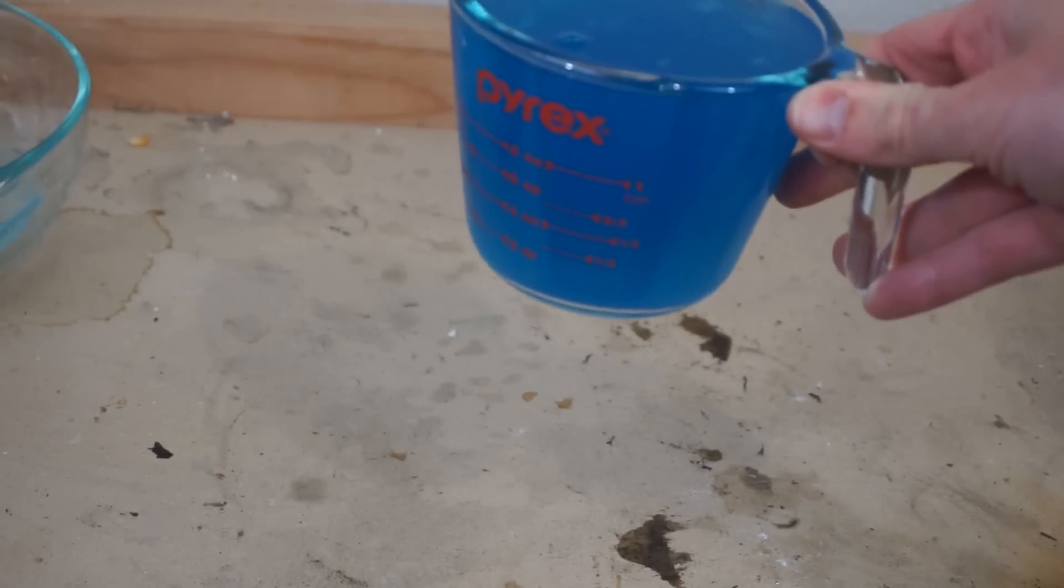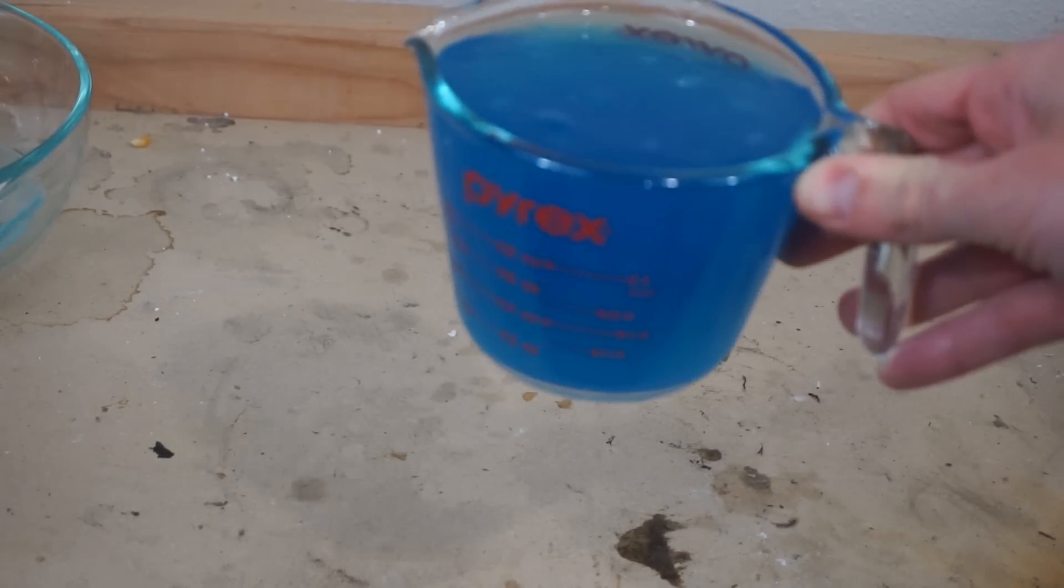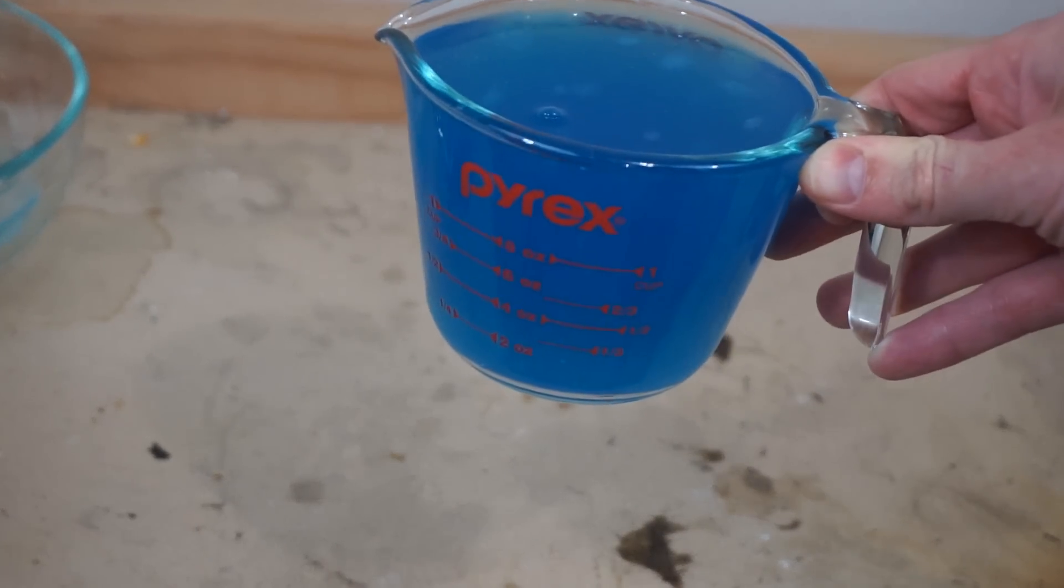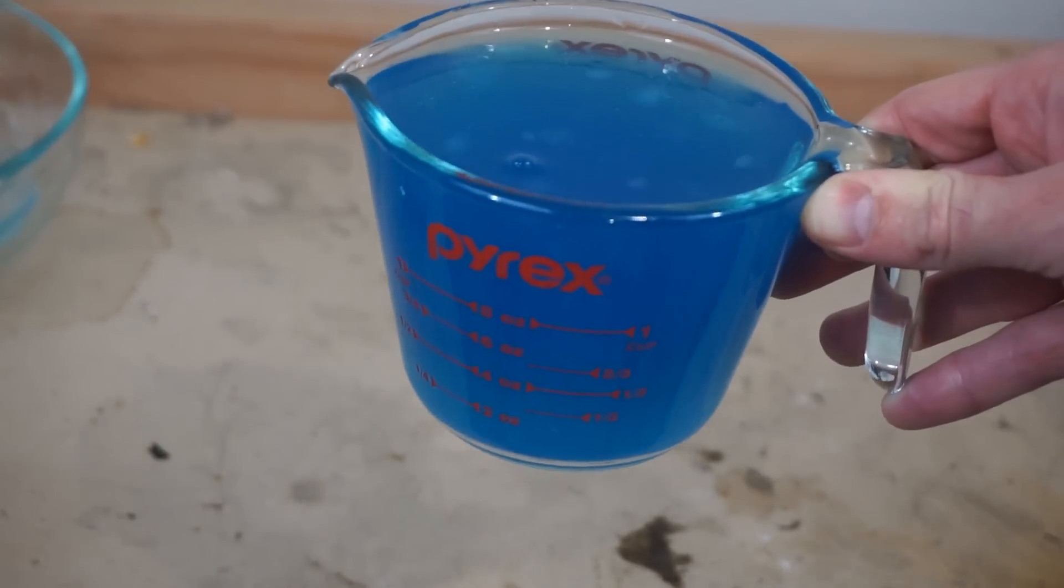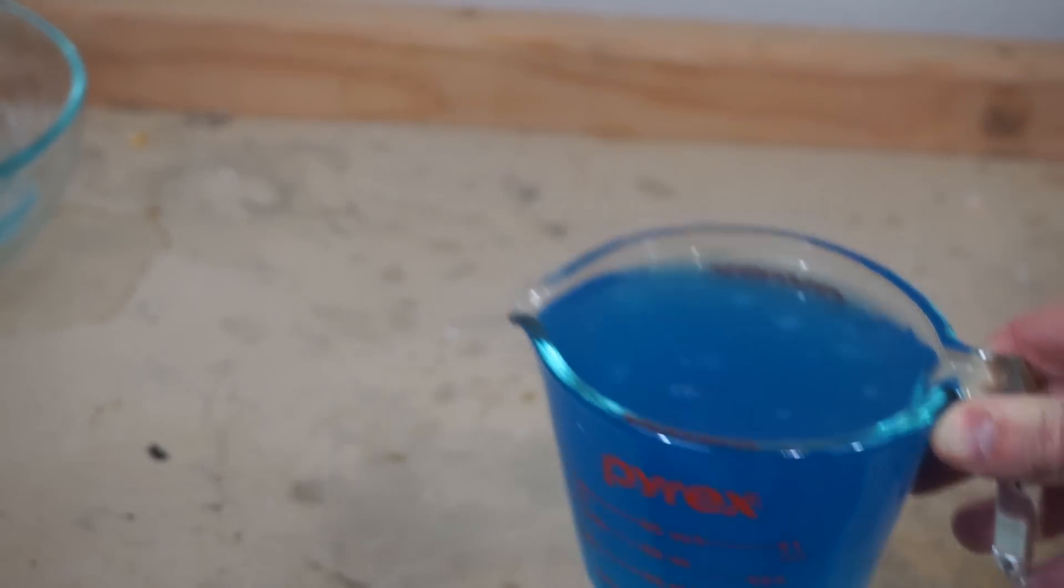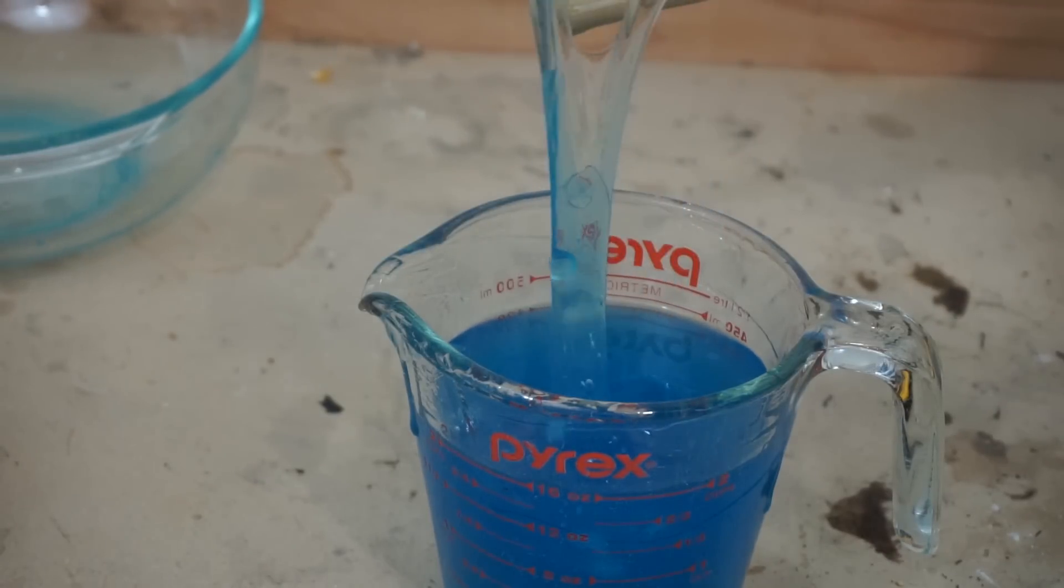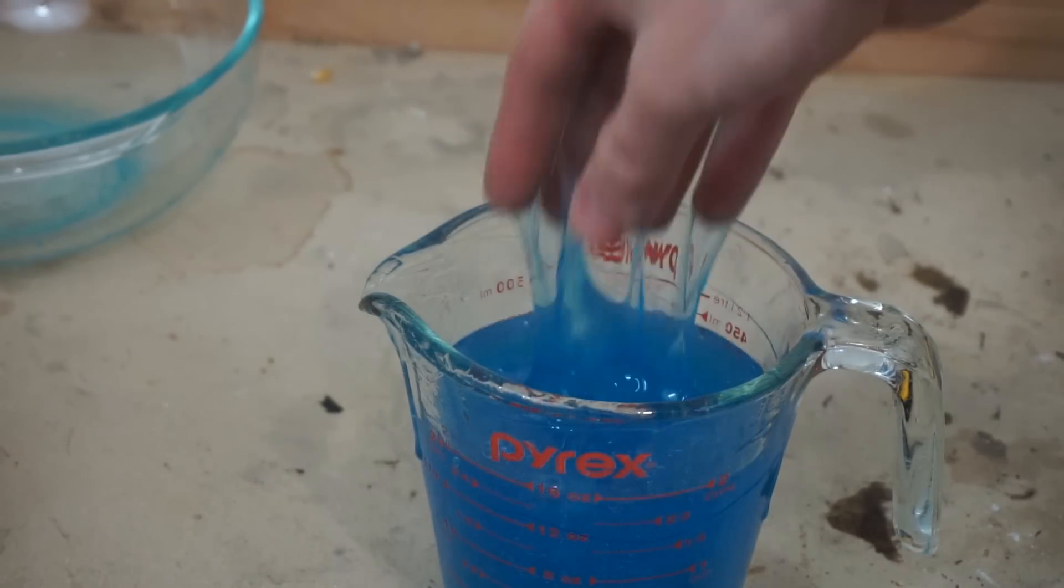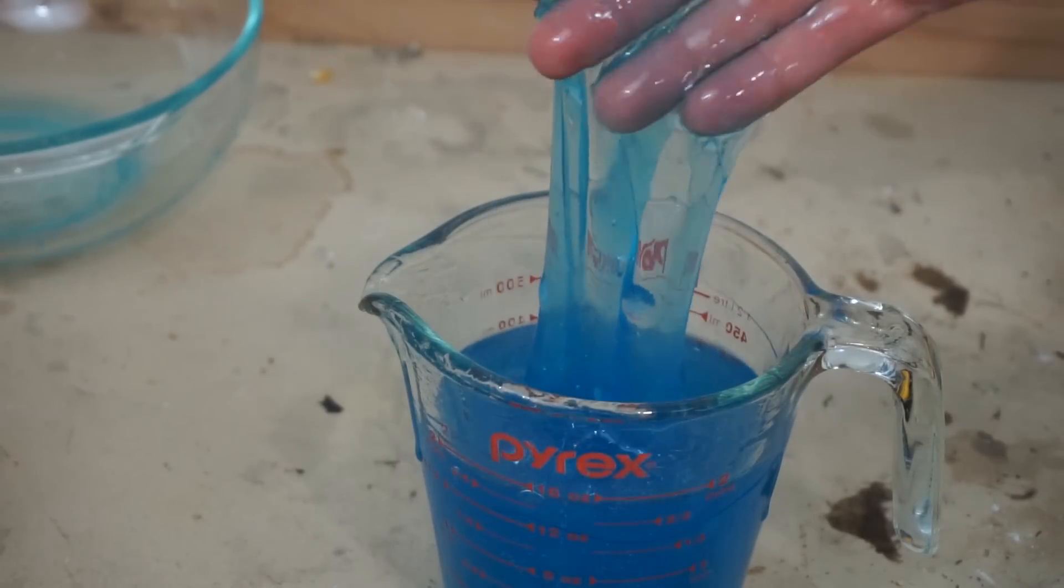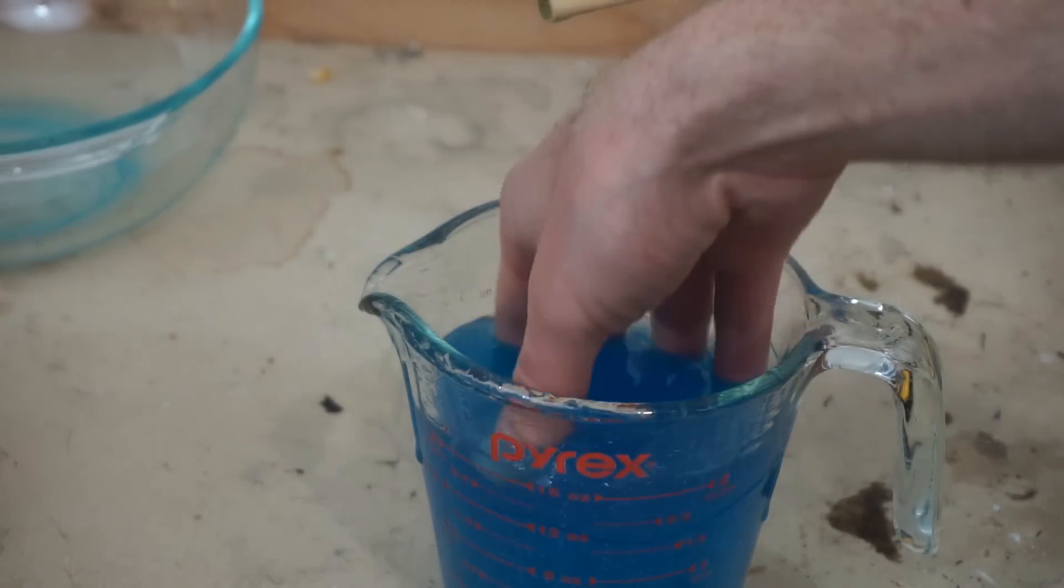So another reason you might have heard of polyethylene glycol is because it's also a laxative. So gotta make sure I don't drink any of this. So the consistency of this stuff is just like mucus, it's really weird to handle. So normally this stuff is just clear, but I put blue food coloring in it so you could see it better.